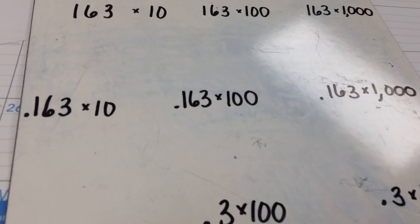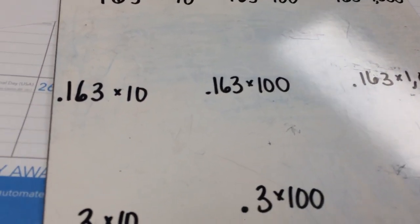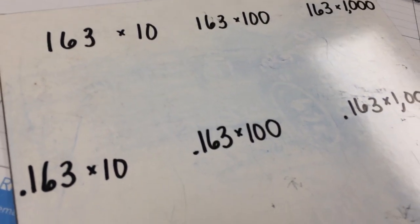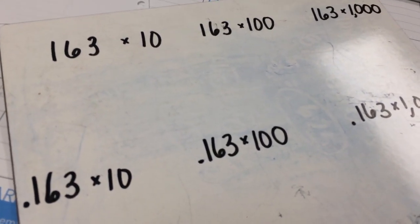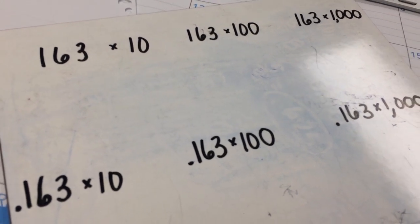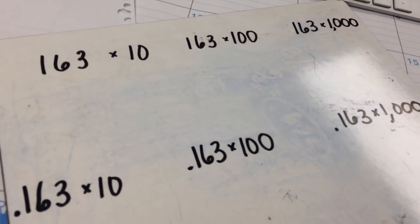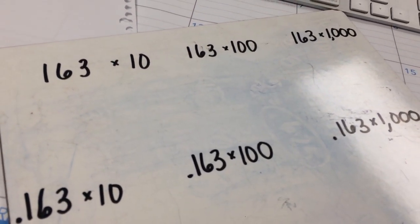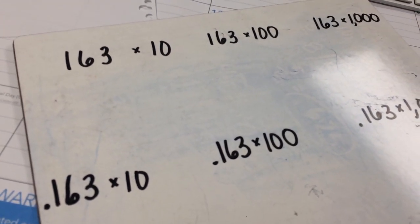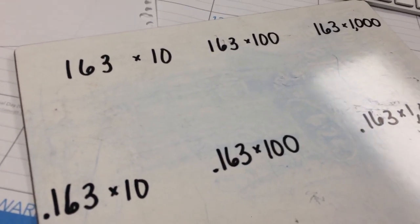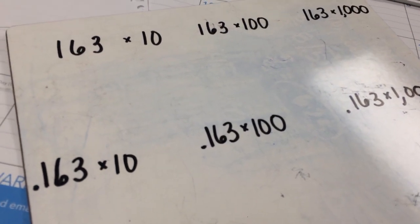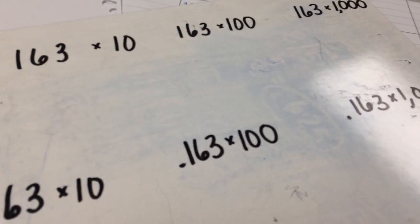Alright, this is our second to last math lesson for the year, so that's exciting. What we're doing is we are multiplying by 10, 100, and 1,000, and we're also dividing by 10, 100, and 1,000 today. It's really easy. I don't even want you to open your books right now because there's a lot of numbers and symbols and words that are just going to confuse you. So I'm going to show you how to do it, and then I'll tell you when it's practice problem time so that you can do it with me.